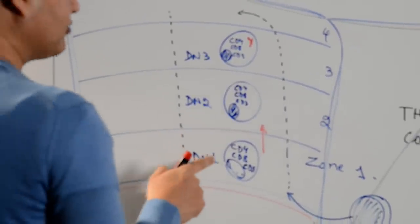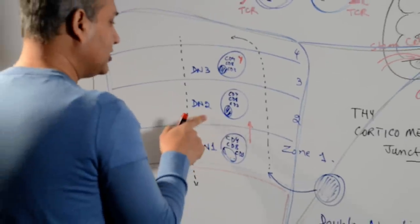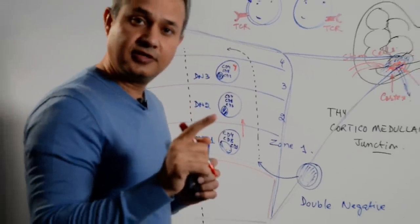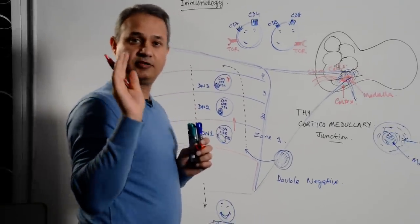Good. So now we've gotten double negative one, double negative two, double negative three, nothing on the surface, but T cell receptor is being formed now. Good.